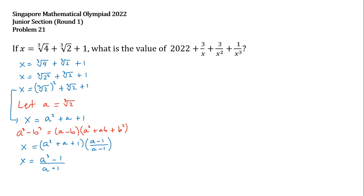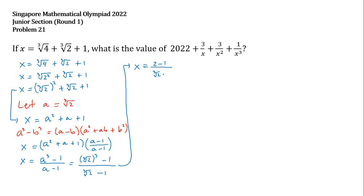Now let's substitute back the cube root of 2 for a. So x equals the cube root of 2 raised to 3, minus 1, over the cube root of 2 minus 1. That gives x equals (2 minus 1) divided by (cube root of 2 minus 1), which is 1 over (cube root of 2 minus 1). So we can write: cube root of 2 minus 1 equals 1 over x. Let's set this aside and manipulate the second expression.